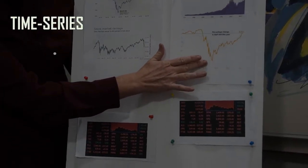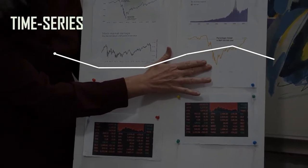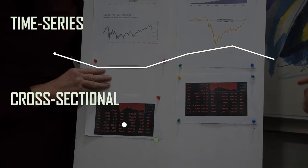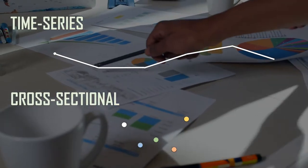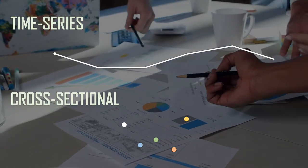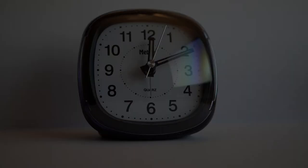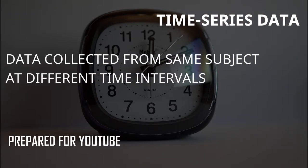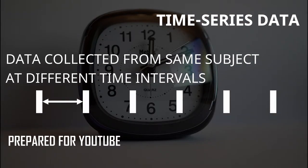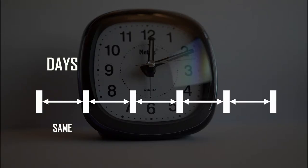Time series: one subject over a period of time. Cross-sectional: multiple subjects at one specific point in time. They have their own purpose. You collect time series data if you want to know about the trajectory of something over a period of time. The time intervals will be the same — it might be every week, every month, every year, and so on.